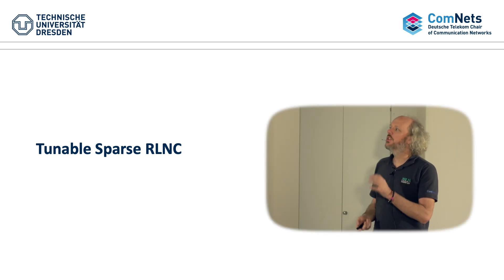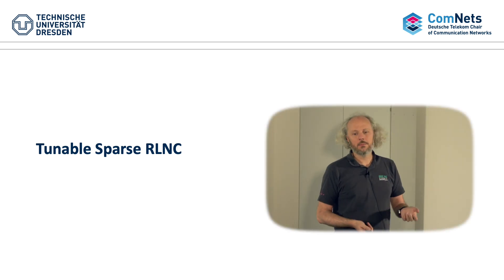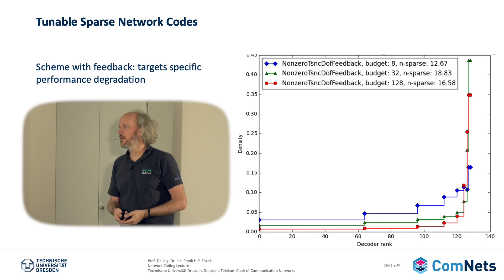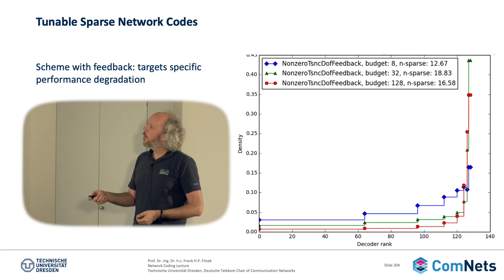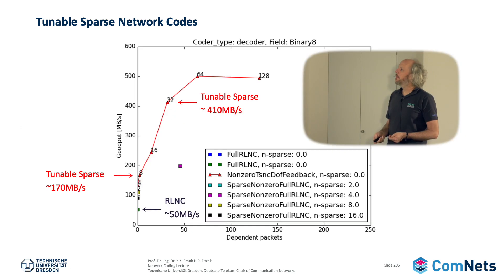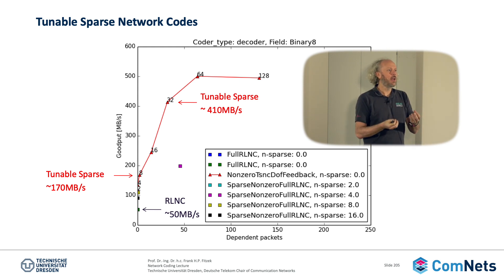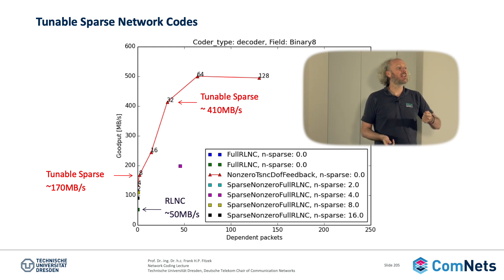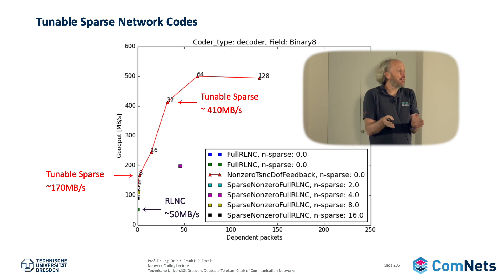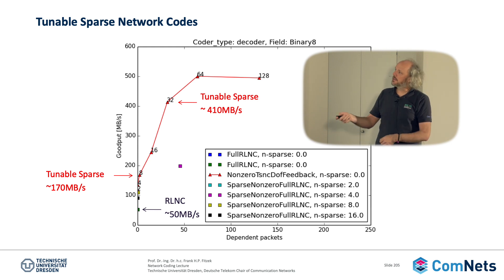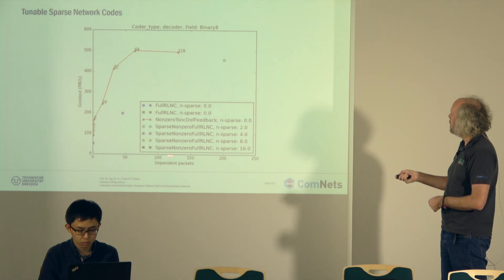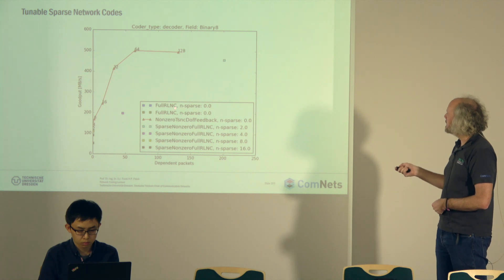There's something we call tunable sparse, or shifting gears sparse. Here you can see what the density and the decoder rank are and how they increase. There's a nice plot about goodput — goodput and throughput are two different things. Goodput means how much can you really bring through; the decoding speed is one way, but how valuable that decoding speed is, is stated by the goodput. Here are the dependent packets, and let's take the full RLNC without sparsity.